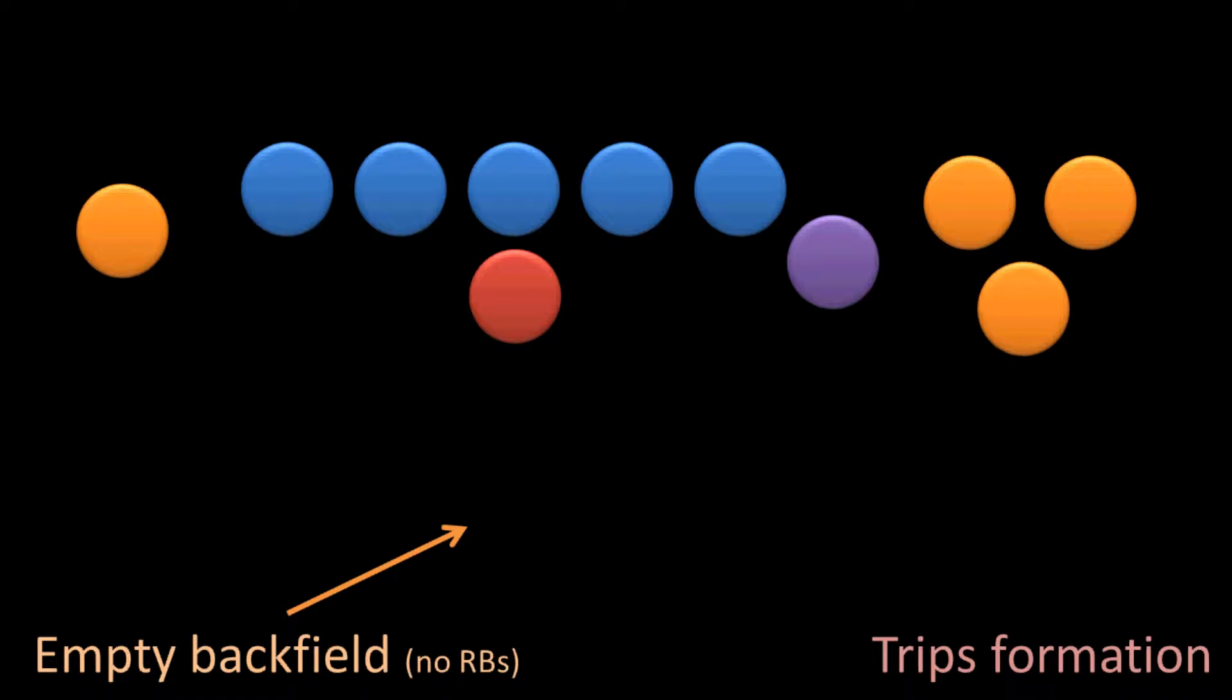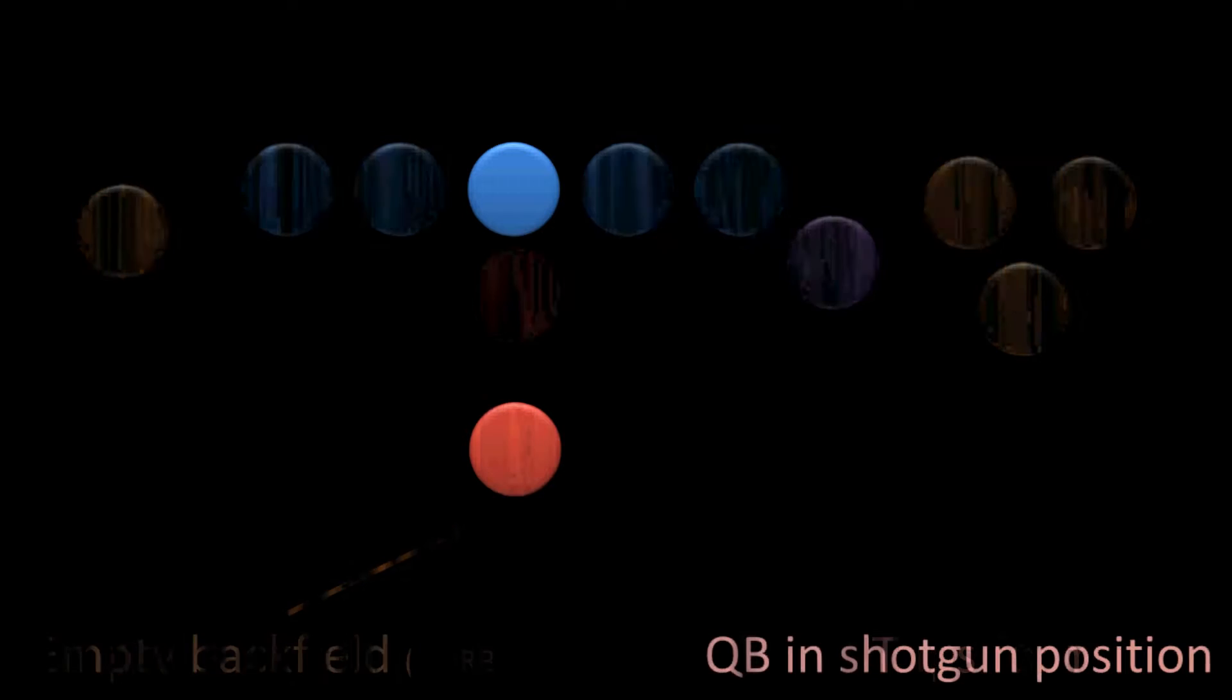Now, one common variation that we'll see with the trips formation is that the quarterback will not be under center. And if he's not under center, then he will be in the shotgun formation.